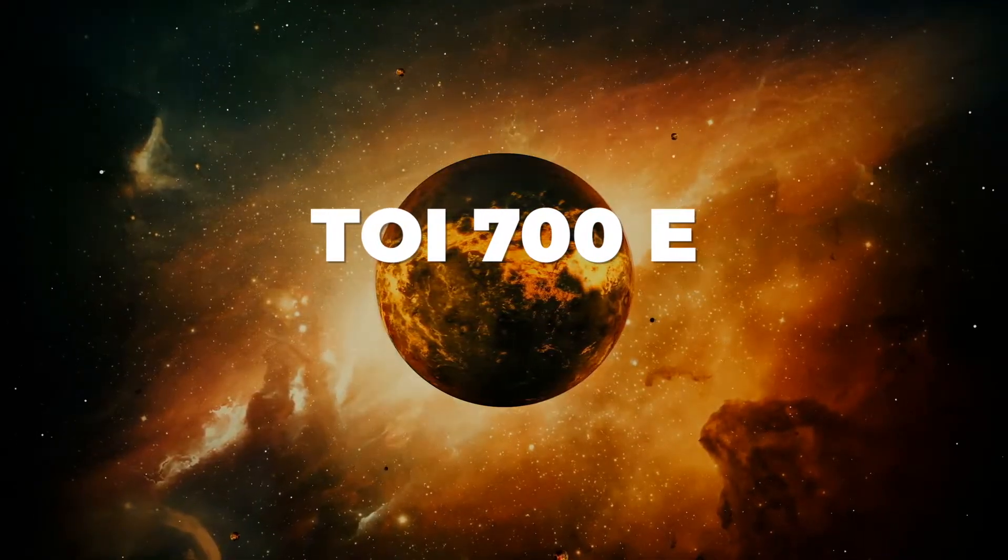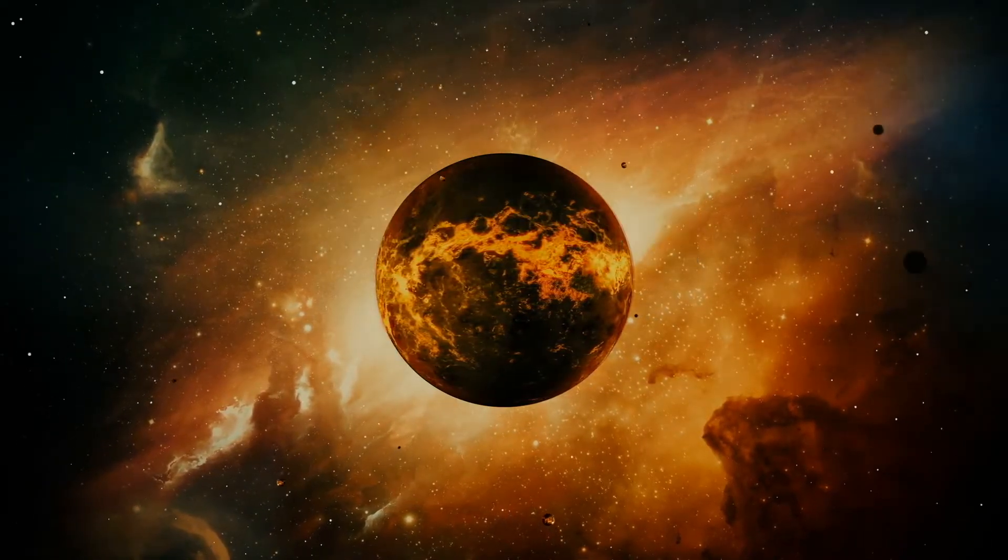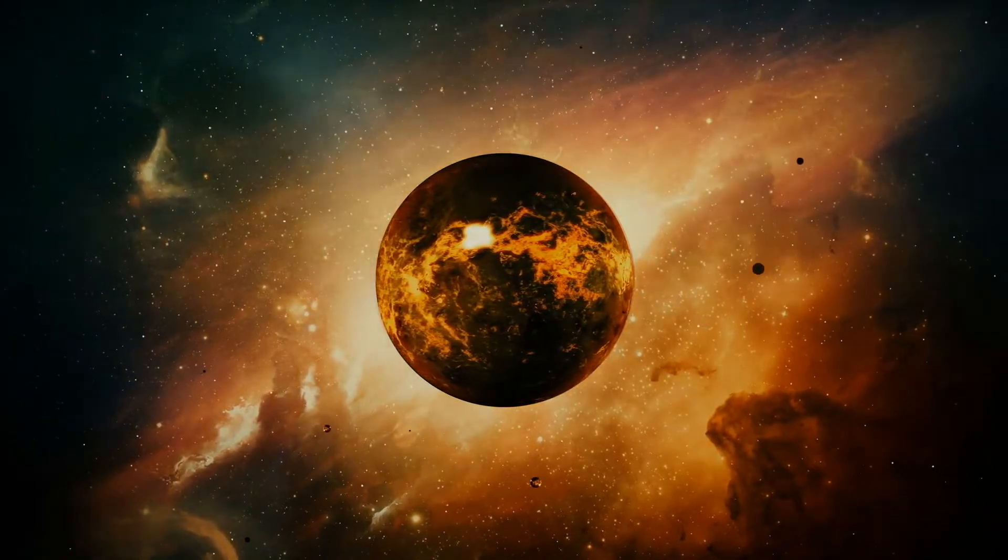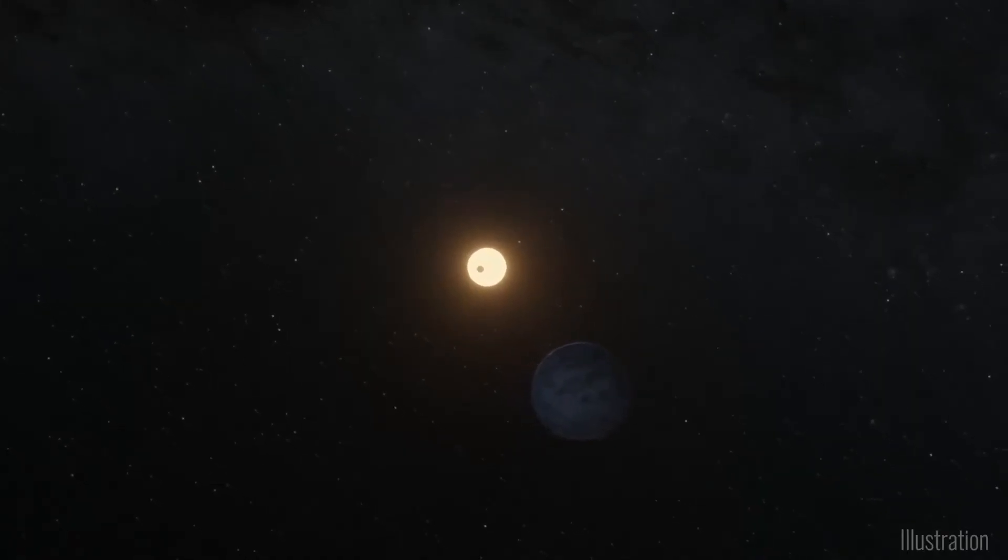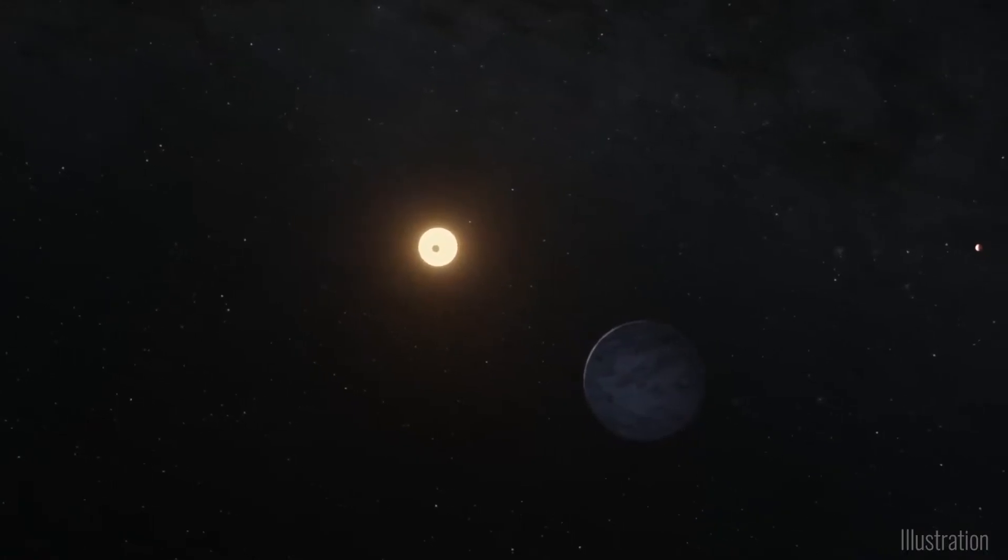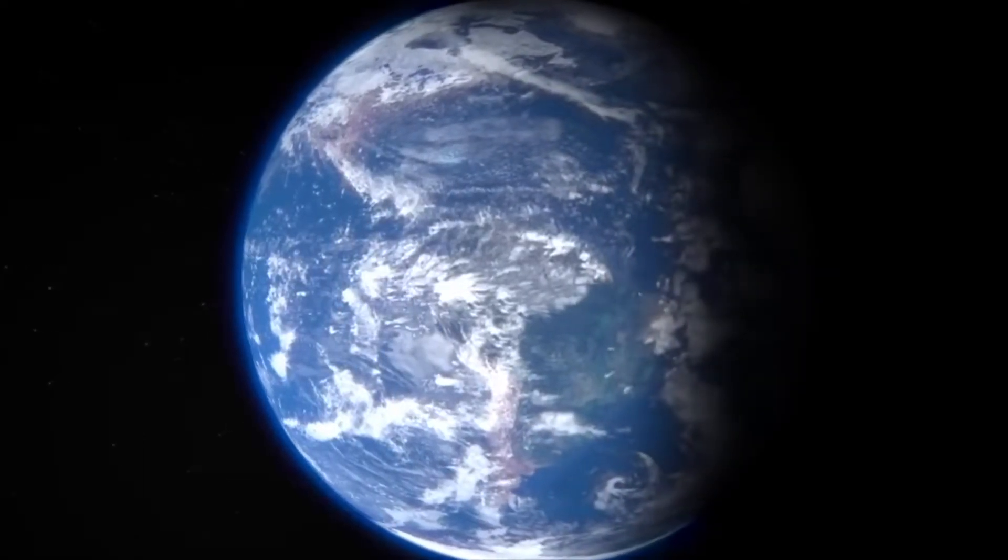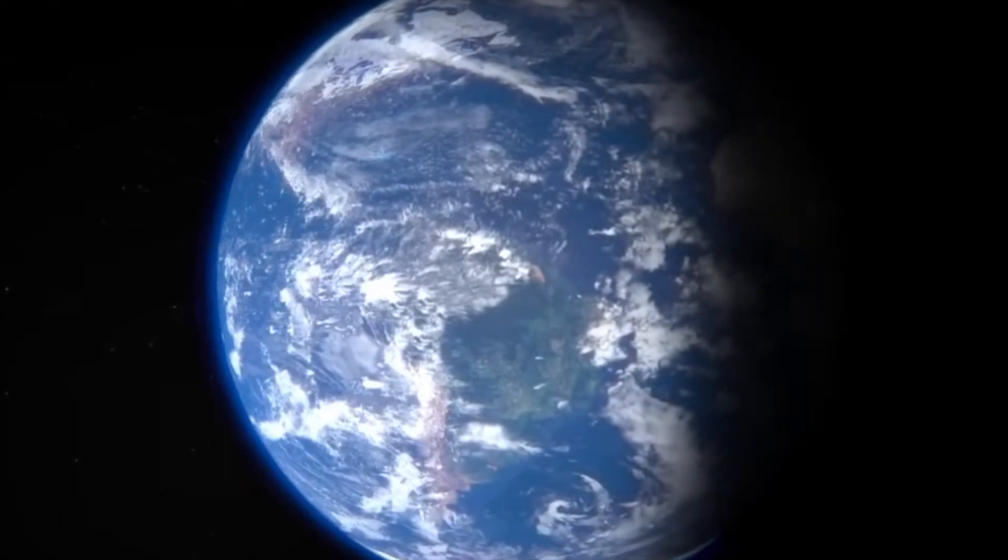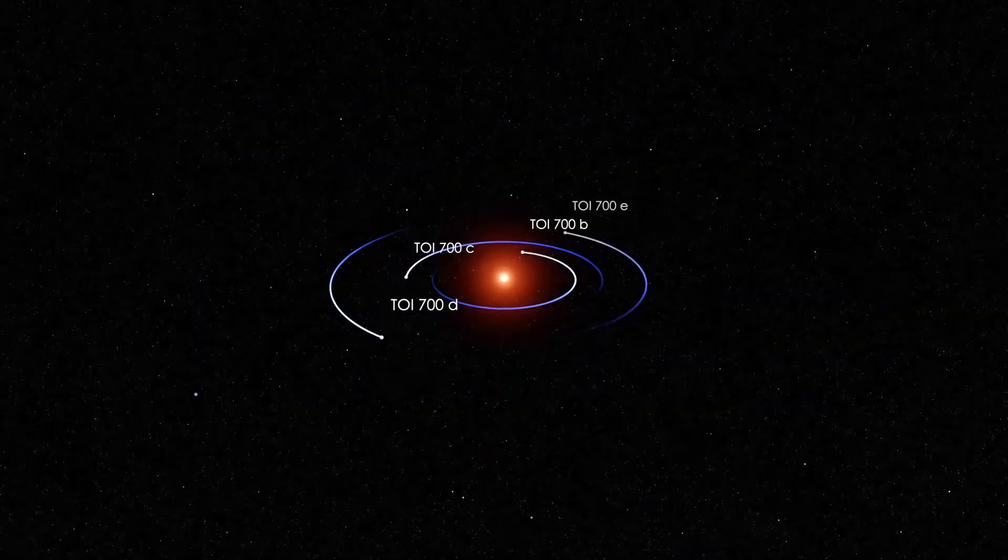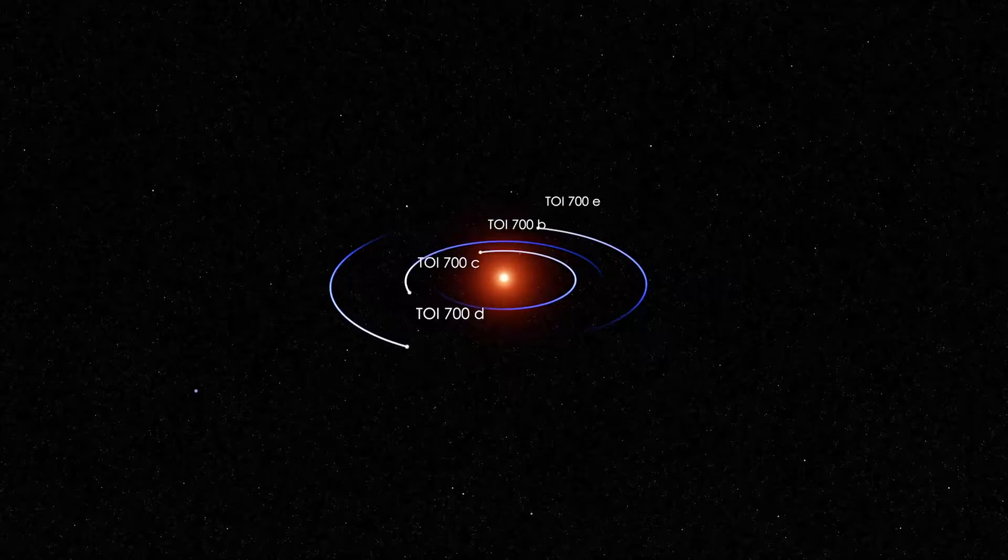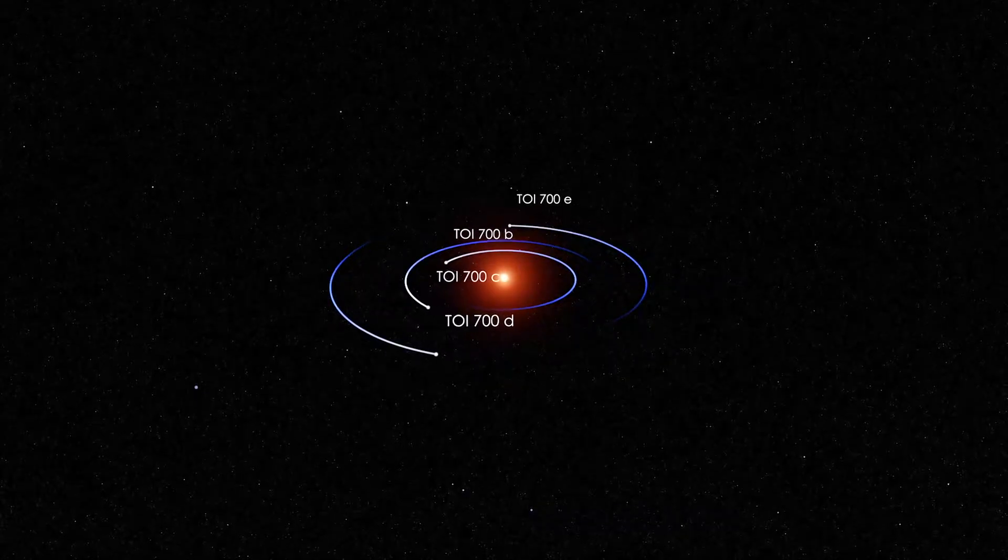Located approximately 101.4 light years away from Earth, within the constellation Dorado, a planet called TOI-700E is about the same size as our Earth and has a slightly larger radius than Earth. This planet may be rocky, similar to Earth, because it has an equal mass and composition.